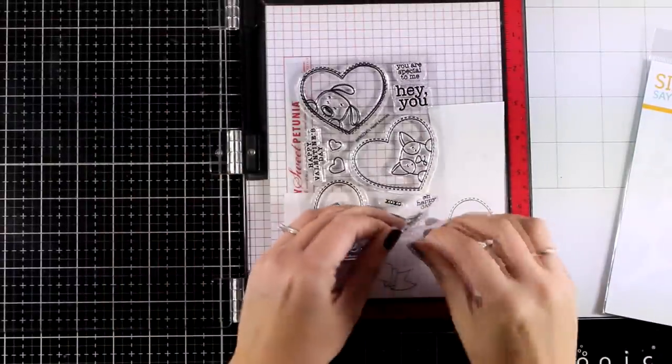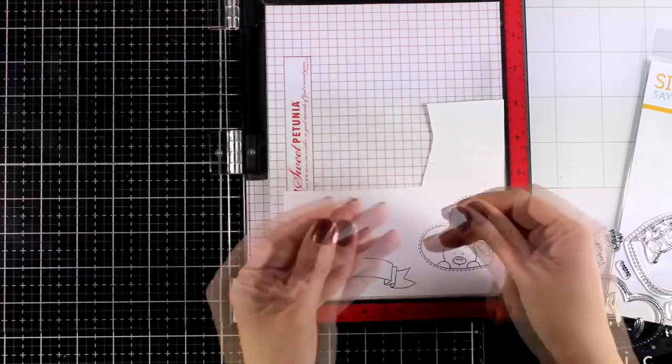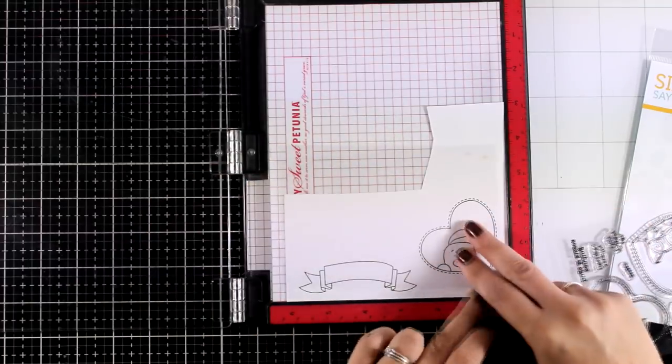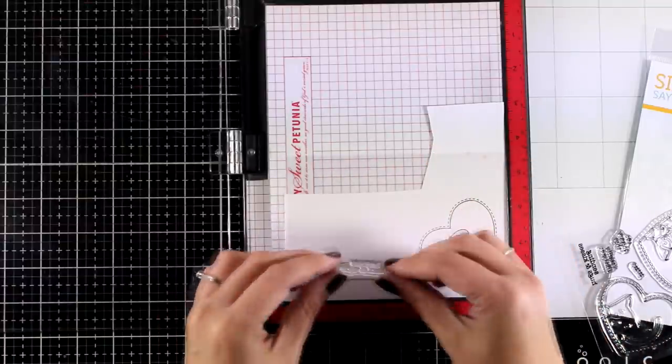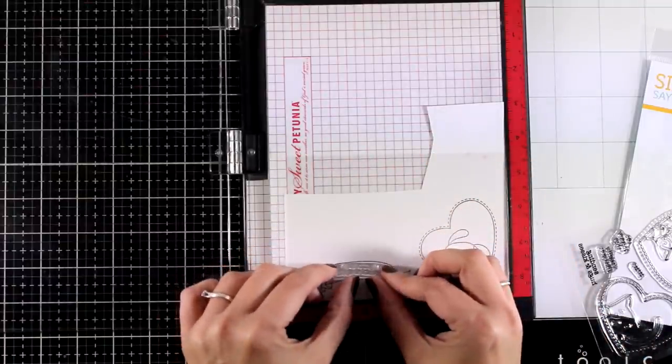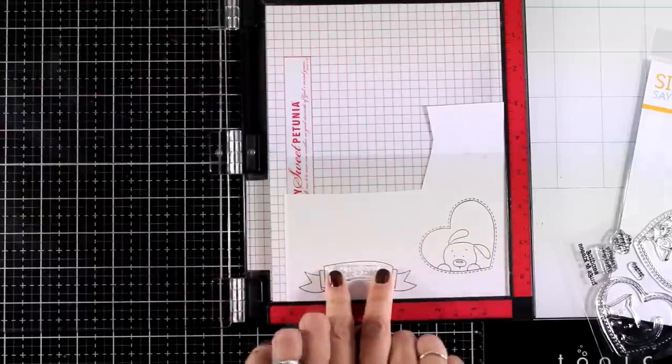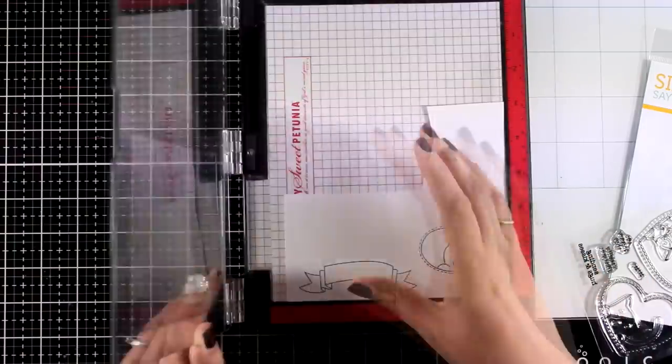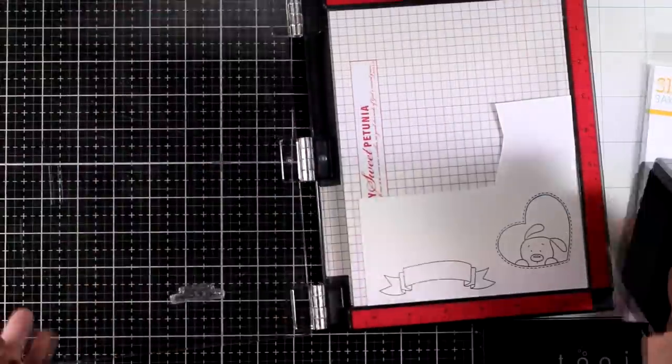I went with the one that says hugs and kisses and I'm also going to use the plastic cover just temporarily over my Misti so that I can stick the sentiment on top and I can keep it curved. Following the curve of the banner now I'm going to close the door of my Misti pick up the sentiment and stamp it with black ink.